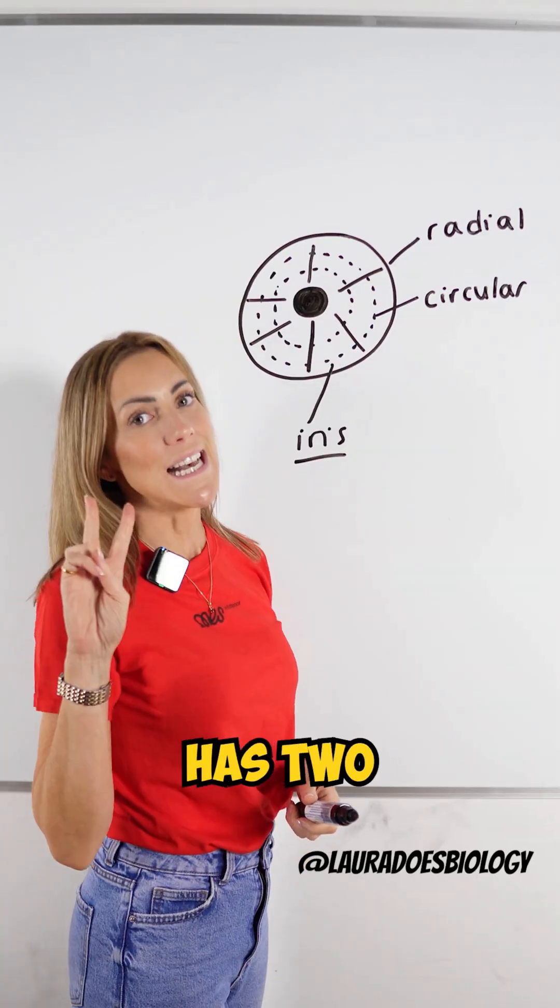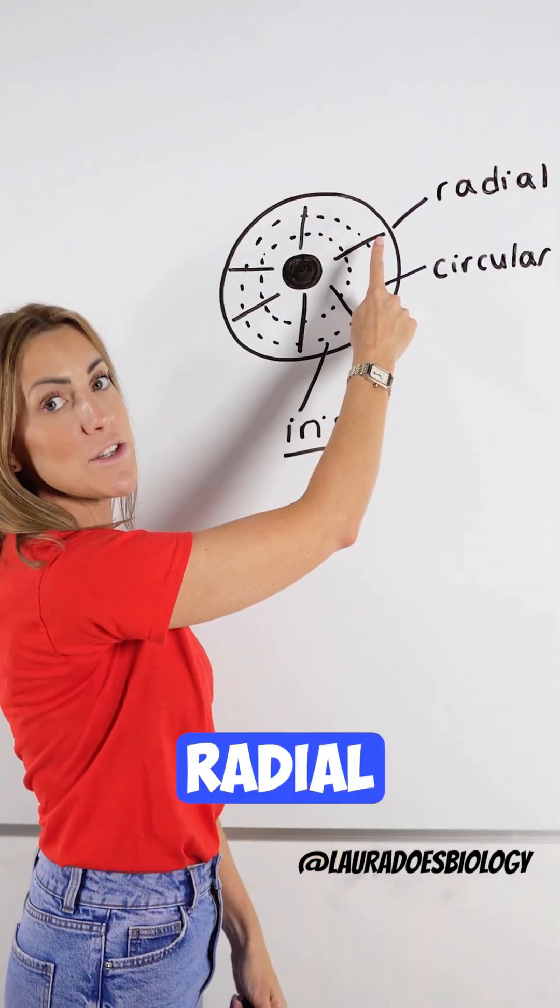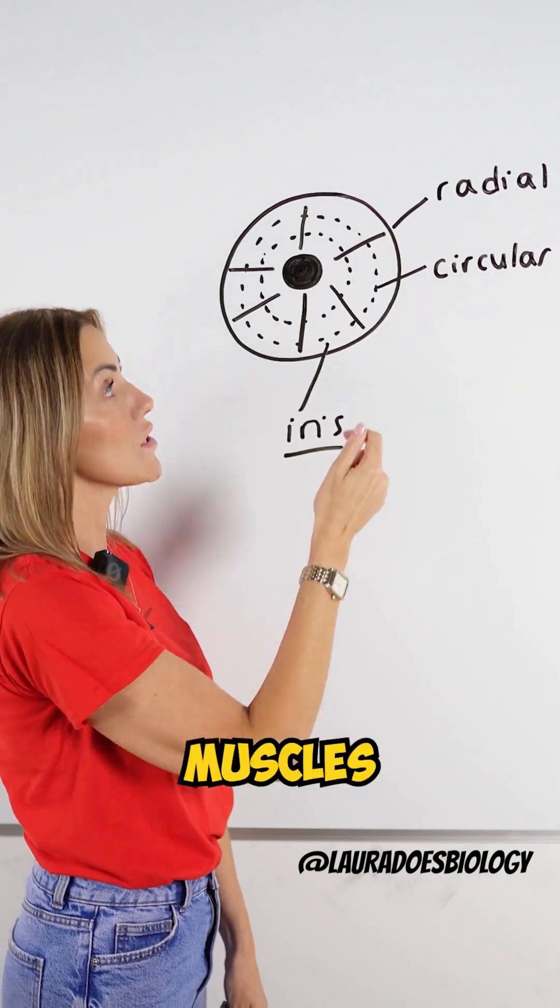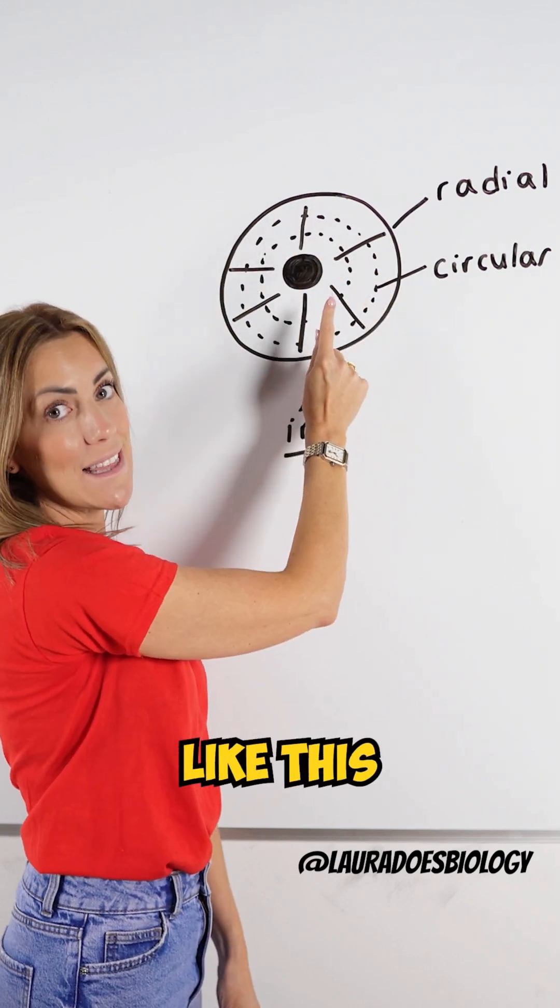Now your iris has two sets of muscles: the radial muscles that radiate out like this and the circular muscles that go around the iris like this.